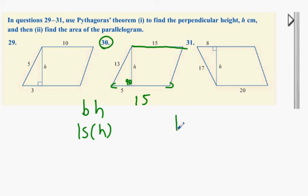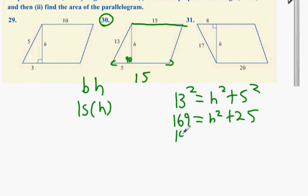So, what you do is you say 13 squared equals h squared plus 5 squared. 13 squared is 169. That equals h squared plus 25. And finally, when you bring the 25 over to the other side, it's 144 equals h squared. h equals 12.